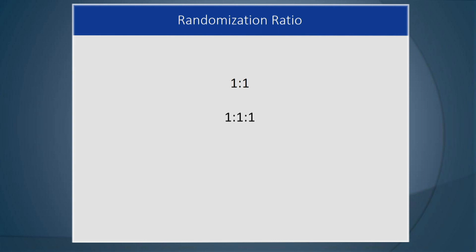One-to-one-to-one means participants are assigned one-third to treatment A, one-third to treatment B, and one-third to treatment C. If you see one-to-two, that tells you it's a study with two interventions, but one-third is assigned to A and two-thirds to B. You might do that when treatment A is very costly or invasive, so you want fewer participants going there, while treatment B is easier and less invasive.